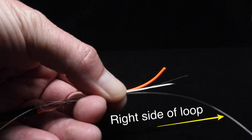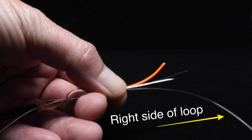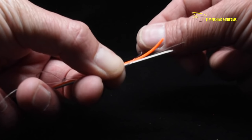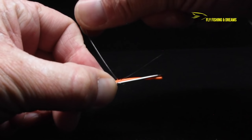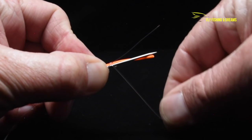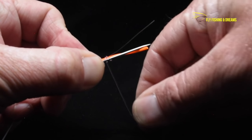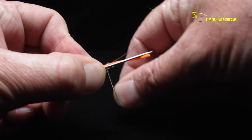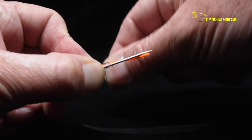Begin wrapping the right side of the loop toward the left hand. You will wrap it around everything: the bodkin needle, the fly line, and both the fat and skinny ends of the leader that you're holding in your left hand. Wrap a minimum of four to five turns.